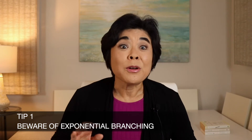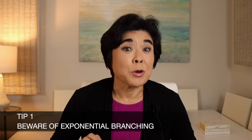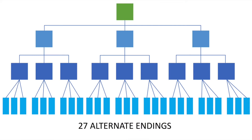Tip number one: beware of exponential branching. Traditional branching can get very complicated very fast. Take a look at this example where you give the player three choices at each decision. Even if they only go through three decisions, you'll need to build out 27 alternate endings. In the past, this kind of structure was called time-cave branching. It grows exponentially and can quickly get out of control.